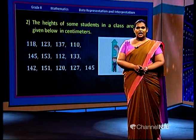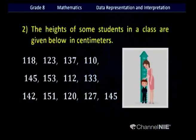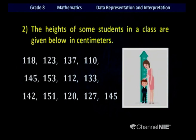Example number 2. The heights of some students in a class are given below in centimeters. You also may have measured your height in centimeters. The heights are: 118, 123, 137, 110, 145, 153, 112, 133, 142, 151, 120, 127 and finally 145. Here we can see all the data are more than 100 but less than 200 — they are between 100 and 200.